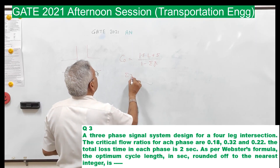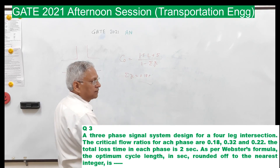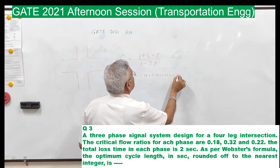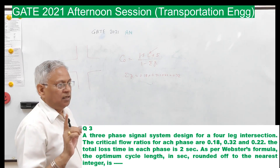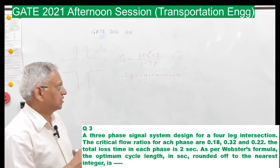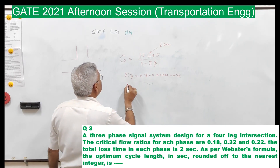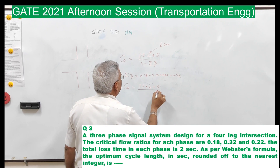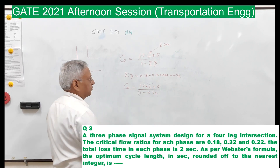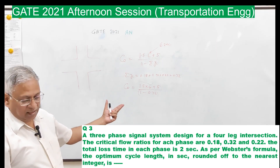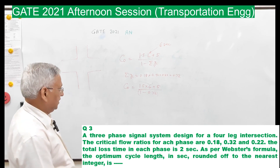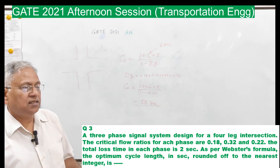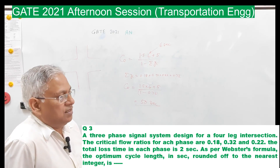Summation of Yi is 0.18 plus 0.32 plus 0.22, which equals 0.72. L is 2 seconds per phase and it is a 3-phase system, so L equals 6 seconds. Therefore C0 equals 1.5 into 6 plus 5, upon 1 minus 0.72, and the answer is 50 seconds. The optimum cycle length is 50 seconds. That is the answer to question number 3.